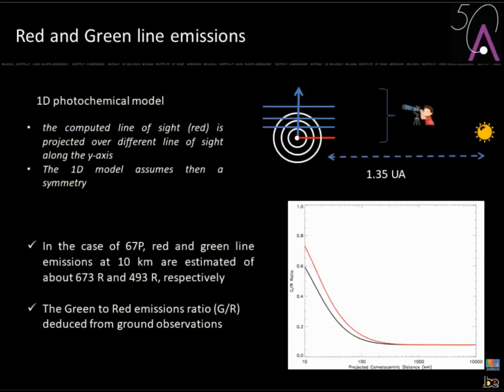The absolute numbers are not the most interesting since calibration is difficult, but you can get roughly 700 Rayleigh and 500 Rayleigh for the red and green lines respectively. What is more interesting is the ratio between the two, because this green-to-red ratio can be compared with ground-based observations.